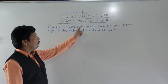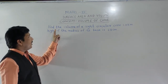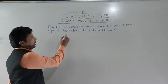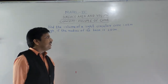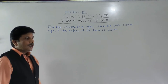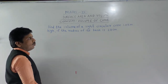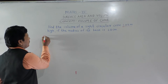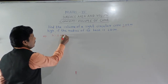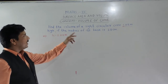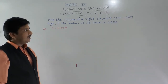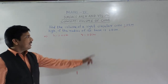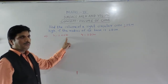First problem based on the volume of a cone: Find the volume of a right circular cone 1.02 meters high, if the radius of its base is 28 centimeters. What is given? Height is 1.02 meters and radius is 28 centimeters. One thing to note — the height is in meters and the radius is in centimeters, so we need to make the units the same.